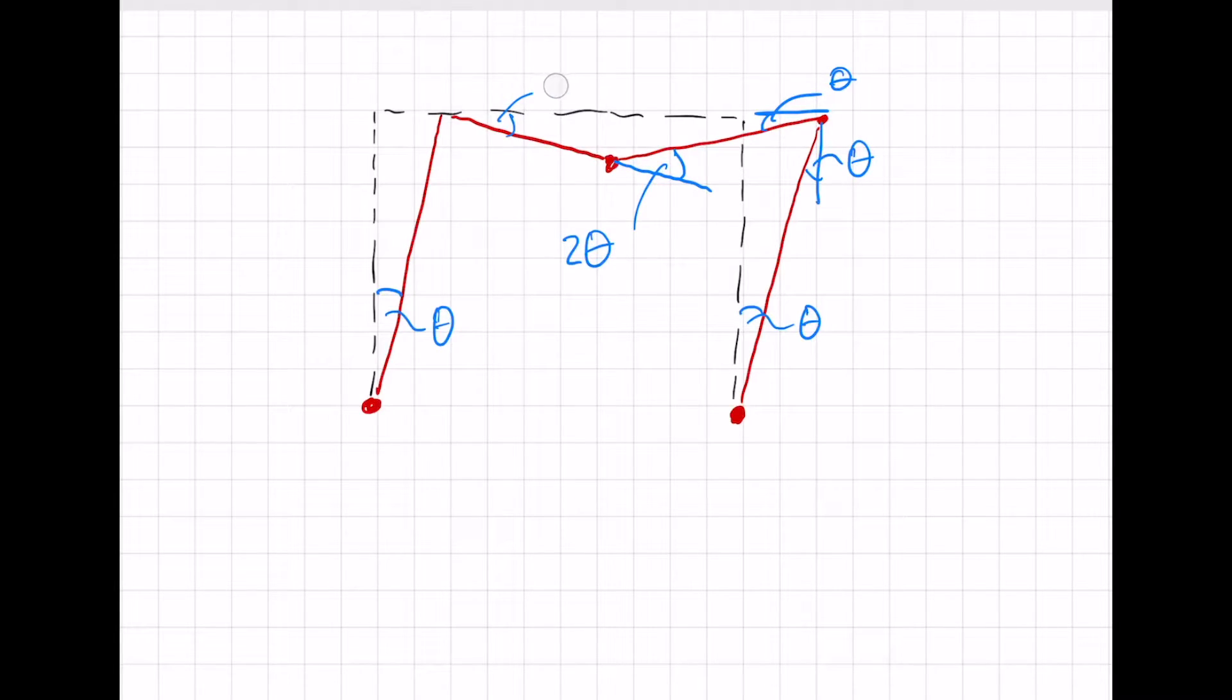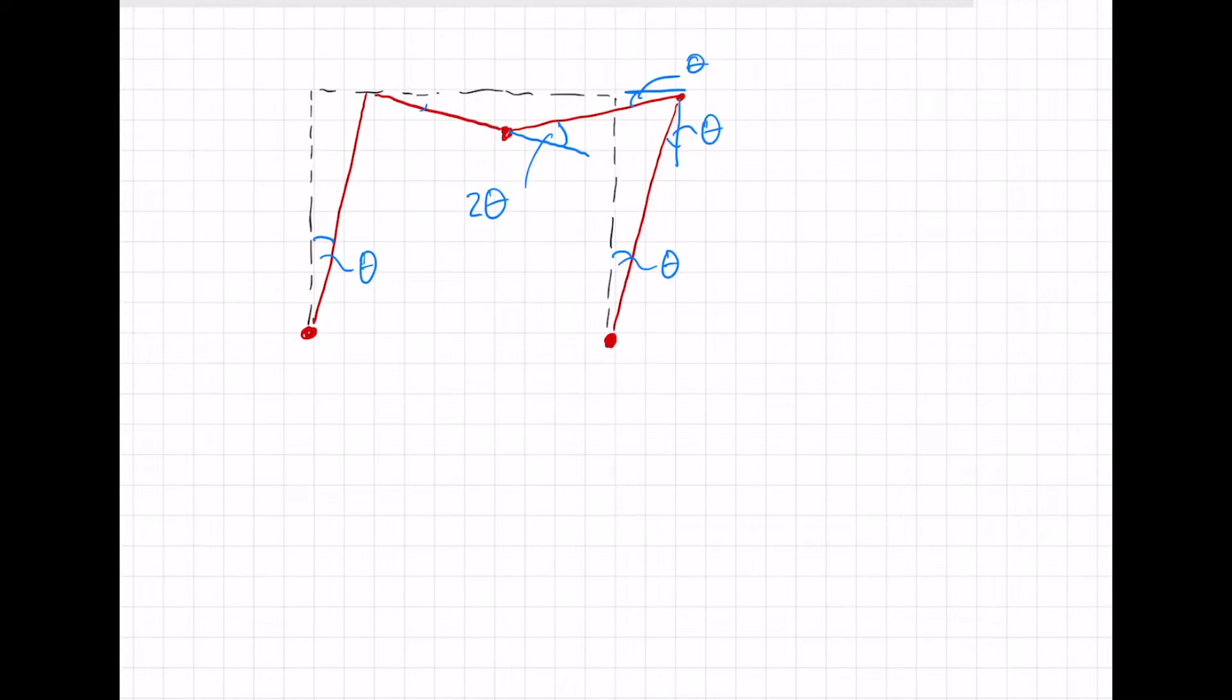Let me just remove that one so I don't confuse. So plastic strain energy is equal to MP times the sum of all of those rotations. We've got one, two, three, four, five, six. So we have MP times six theta.